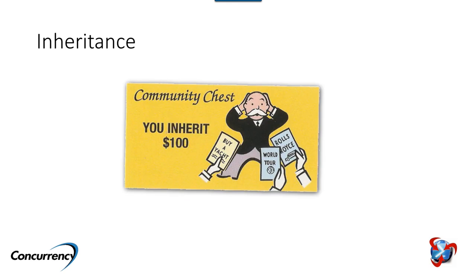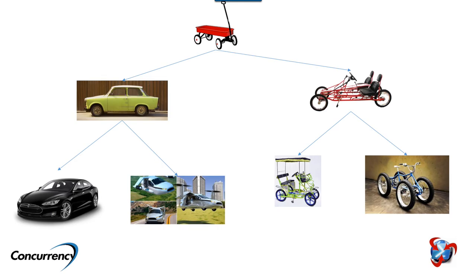The next benefit is inheritance. You have base classes with properties that other classes can inherit. For example, a wagon has wheels and can steer. More specific versions — like a car or a four-wheel bike — inherit that functionality and introduce new behavior. You can go further: flying cars, Teslas, a bike with a roof. The same core properties available in the base class are also available in all classes below it, so we don't have to reimplement concepts like wheels in every class.